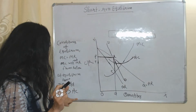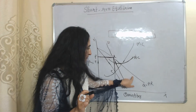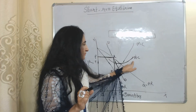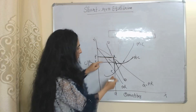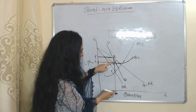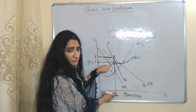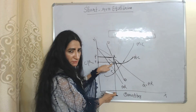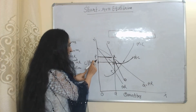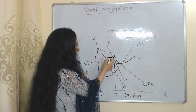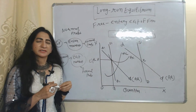For the fourth condition, average revenue should be more than average cost. In the diagram, average revenue equals RQ and average cost equals KQ. Since RQ is greater than KQ, average revenue exceeds average cost. The difference RQ minus KQ is the per unit profit. The entire area TPRK represents the supernormal profit. All four conditions are satisfied, confirming the short run supernormal profit equilibrium.